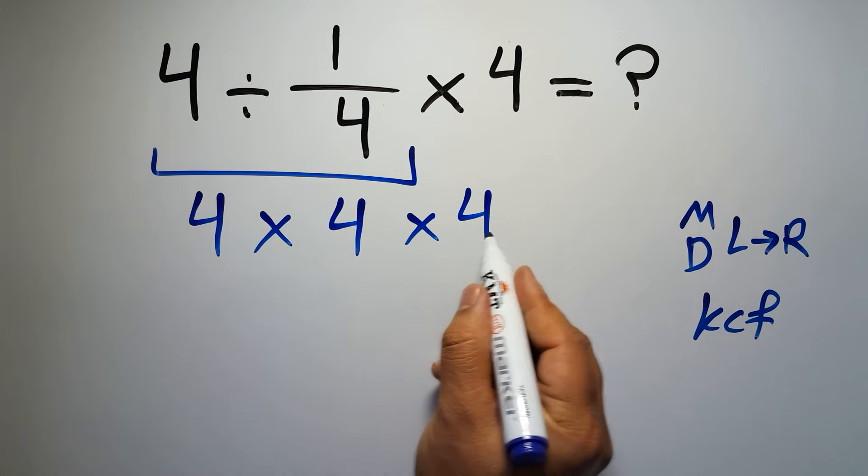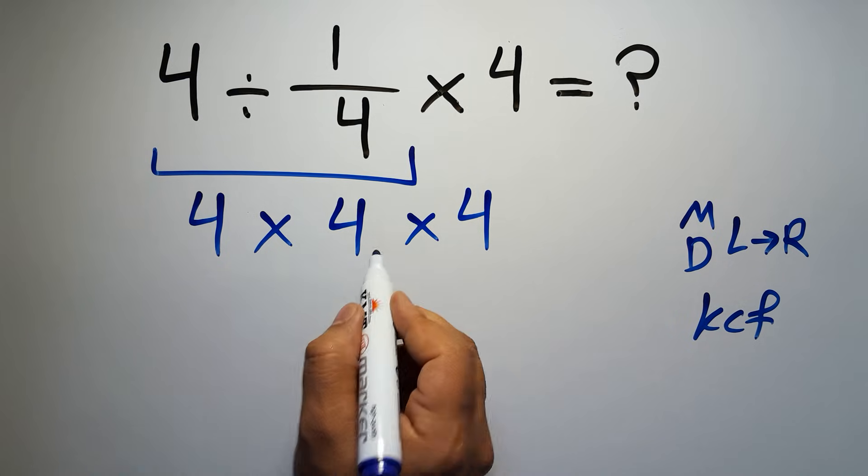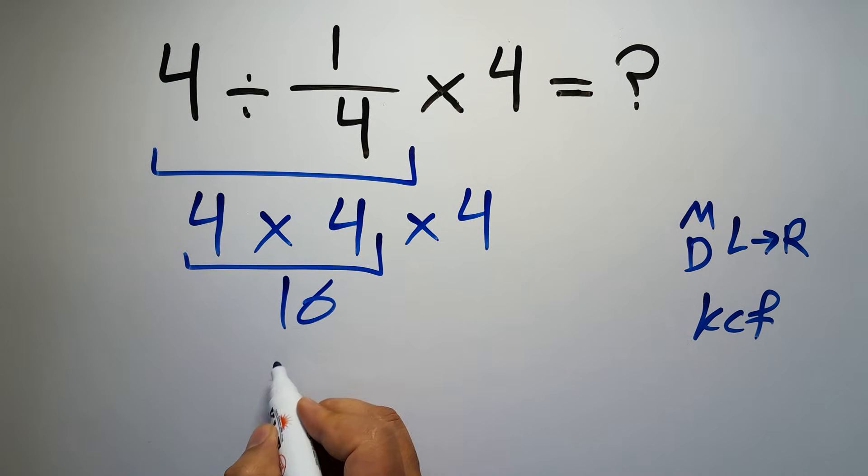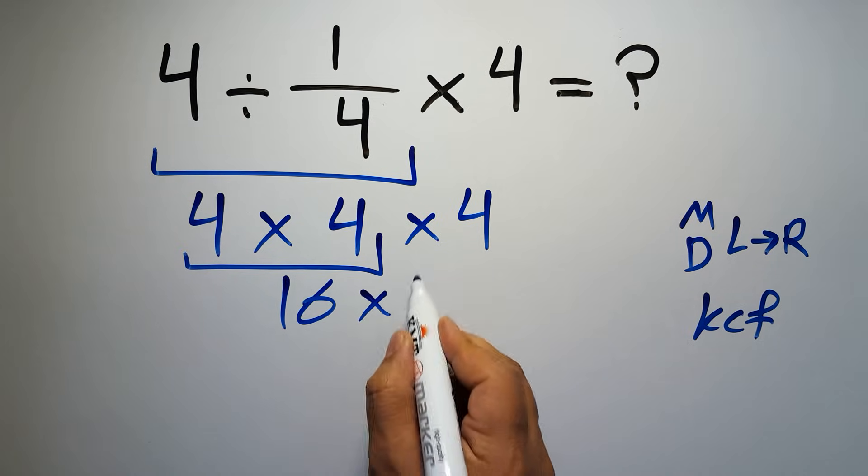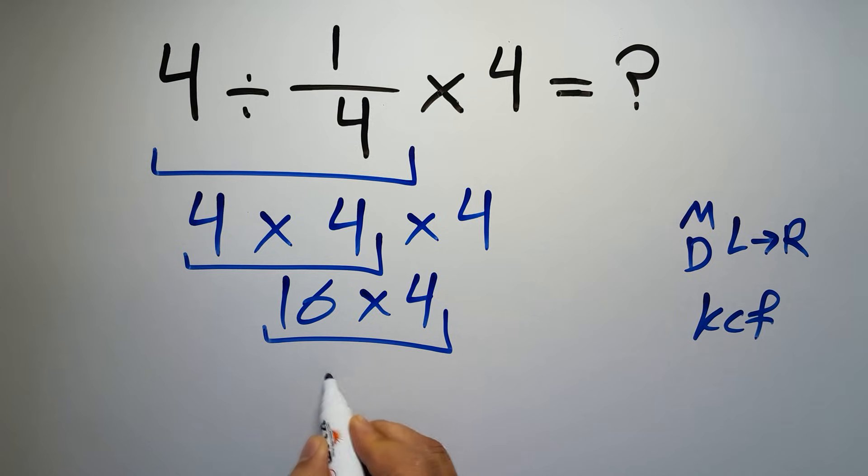So, 4 times 4 times 4. 4 times 4 gives us 16, and 16 times 4 is just 64.